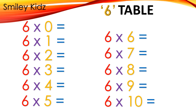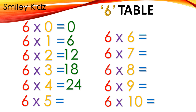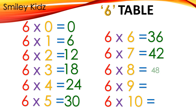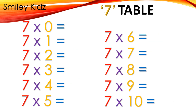Table 6: 6×0=0, 6×1=6, 6×2=12, 6×3=18, 6×4=24, 6×5=30, 6×6=36, 6×7=42, 6×8=48, 6×9=54, 6×10=60.